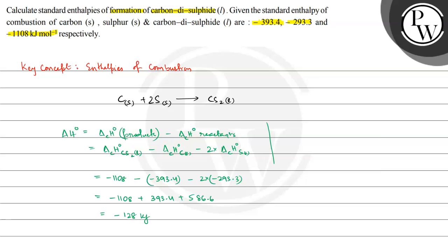So the enthalpy of formation, ΔfH°, for carbon disulfide liquid is equal to minus 128 kilojoule per mole. This is the required answer. I hope you understood the concept well. Best of luck!